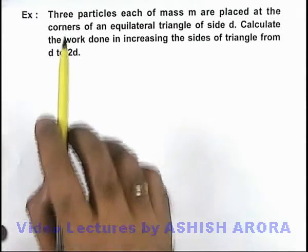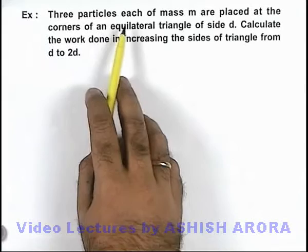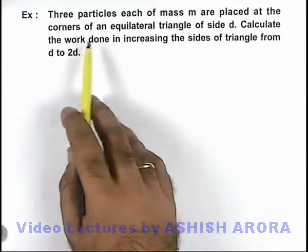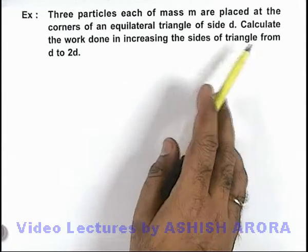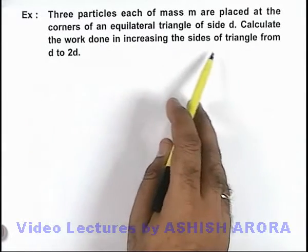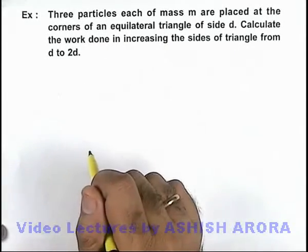In this example we are given that there are 3 particles, each of mass m, placed at the corners of an equilateral triangle of side d. We are required to calculate the work done in increasing the sides of triangle from d to 2d.